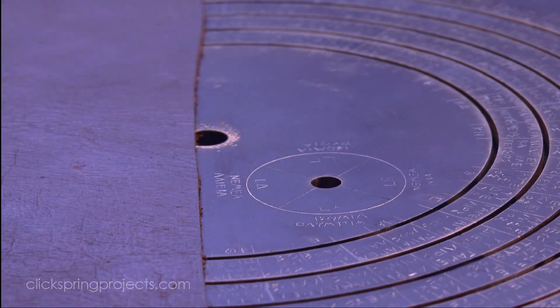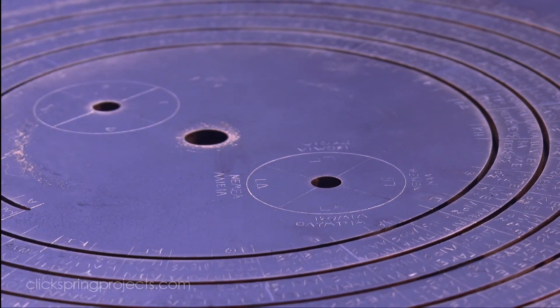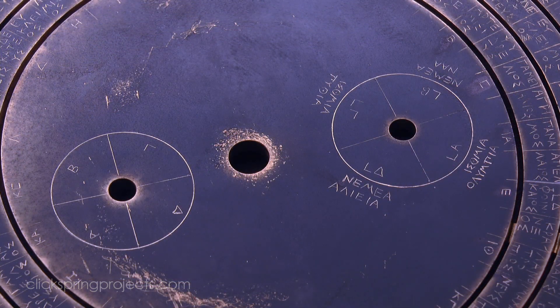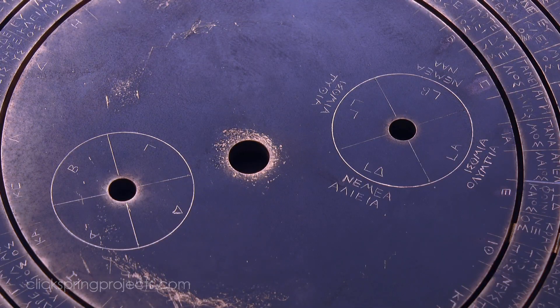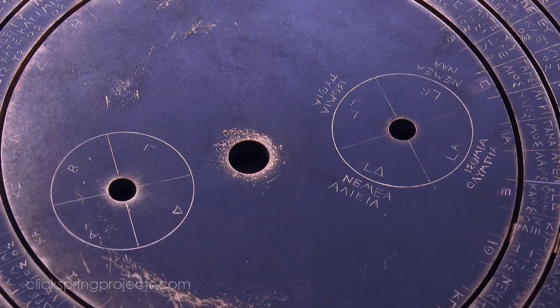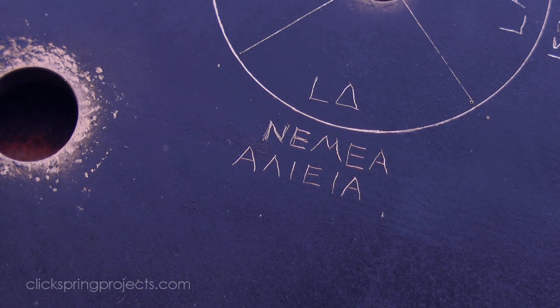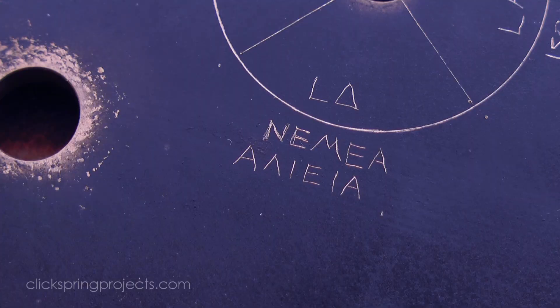The text of the games dial may provide an indication of where the device was constructed. Derek de Solla Price first put forward the idea that the mechanism may have been associated with the device making tradition of Rhodes. And more recently, the reading of the relatively low significance Halieia games of Rhodes on this dial has been interpreted as possibly supporting that suggestion.